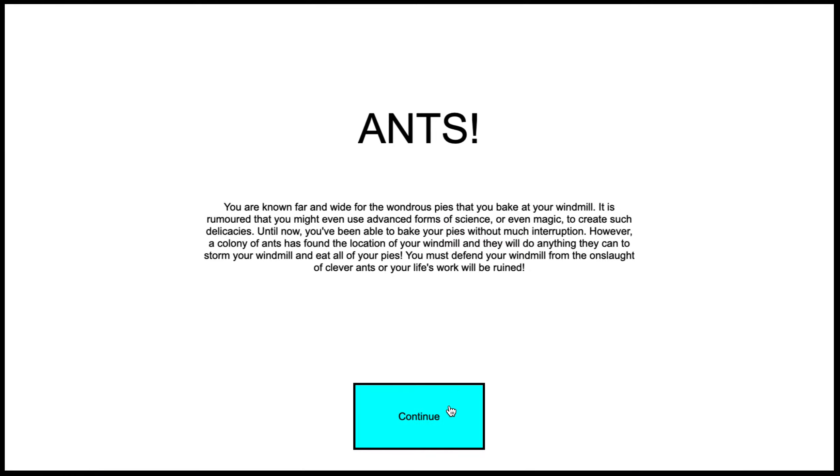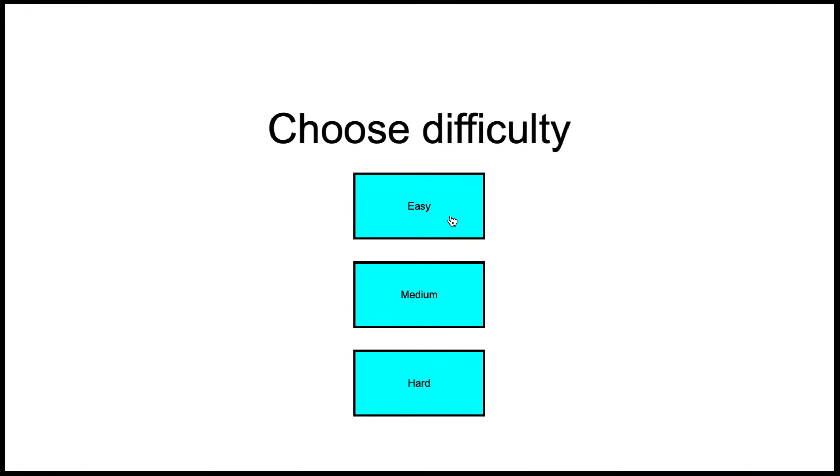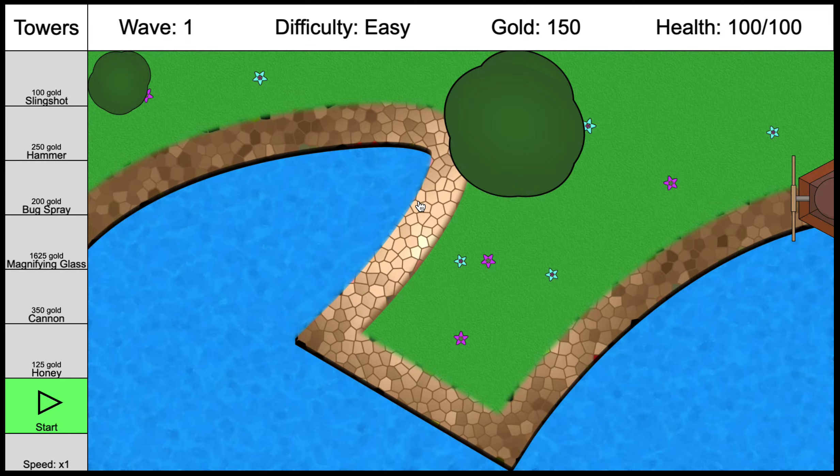I'll just reload it real quick so you can see what the medium level looks like. I'll just keep picking the easy difficulty because all it will change is the price of the gold. So this is the medium level. As you can see, there's less twists and turns, less area to build towers in. The ants just follow along the path and head to your windmill.